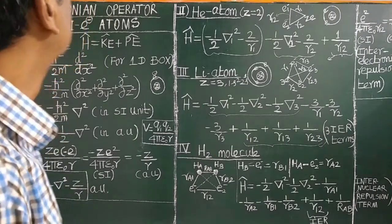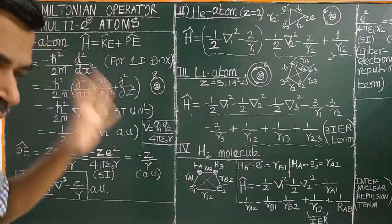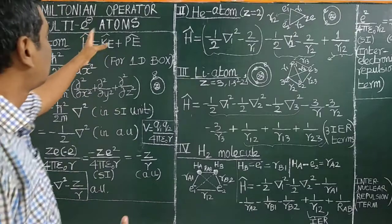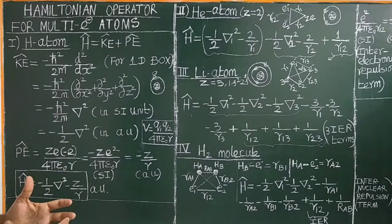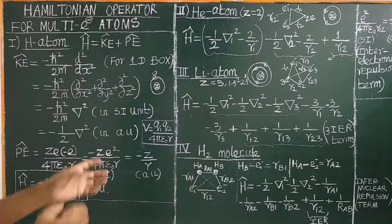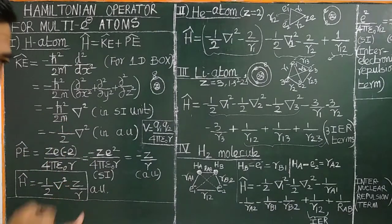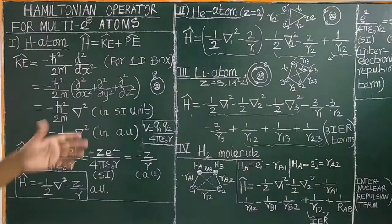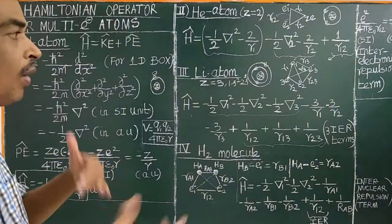How to construct the Hamiltonian operator for polyelectron atoms? Once the Hamiltonian operator is constructed, by using the Schrödinger wave equation, H-cap psi equal to E psi, we can find the energies of the energy levels of the multi-electron atoms. The wave functions obtained by solving the Schrödinger wave equation are called atomic orbitals.